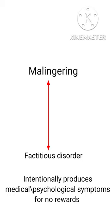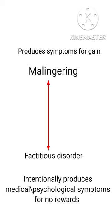Malingering involves intentionally producing or exaggerating symptoms of an illness. This is motivated by an external factor such as a wish to get insurance money or a wish to avoid work. They do this to get an external reward, while in fictitious disorder there is no external reward.